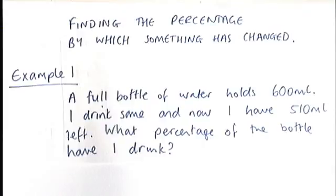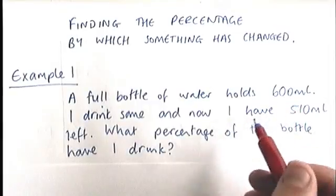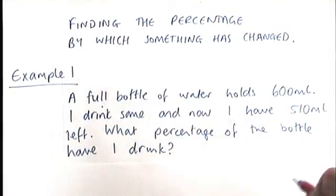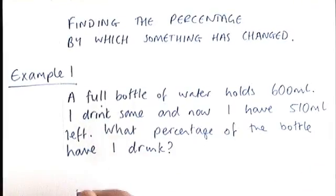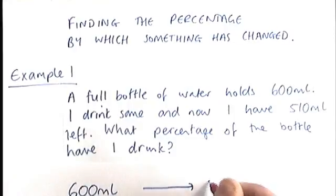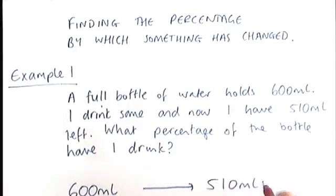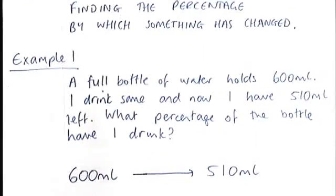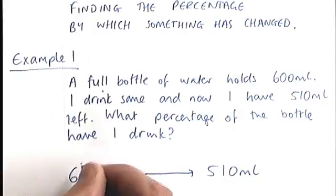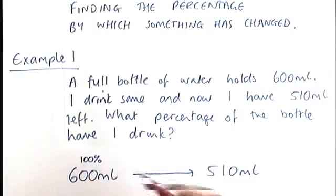Okay, example one. A full bottle of water holds 600 milliliters of water. I drink some and now I have 510 milliliters left. What percentage of the bottle have I drunk? So this question is really asking us, if we start with 600 mils and we end up with 510 mils, what percentage has been lost? Now when we talk about the percentage that is lost, we always think of the original amount as being our 100%.